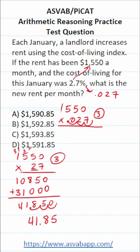In other words, the rent's going to increase by $41.85. So we're going to take that 41.85 and add it to the 1550. If it's helpful, you could put a decimal and two zeros here.